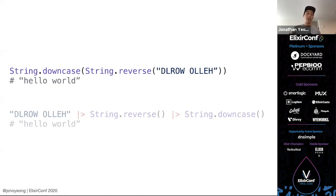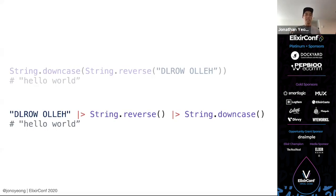So we have a nested function — we take a string, reverse it and downcase it, and we get 'hello world.' Looking at it, it's not the easiest thing to read. You can imagine if we start nesting a lot of functions it becomes harder and harder to maintain. Now with Elixir, we can use the pipe operator to split this nested function into a chain of operations. We take the 'hello world' string, pipe it into reverse, and the result gets piped into downcase.